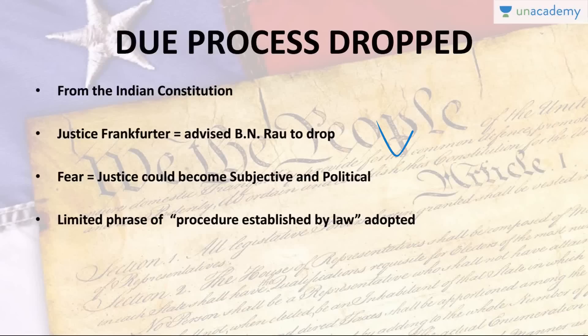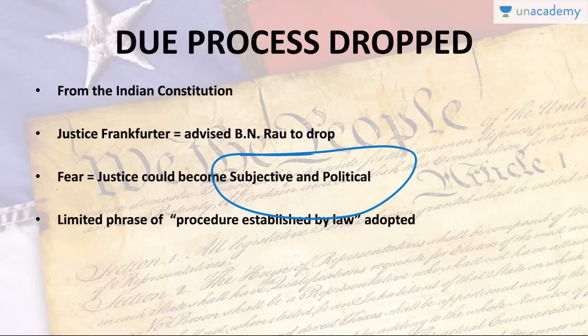Ashok Desai, senior advocate of the Supreme Court, said in an interview that Frankfurter advised against it because, in his view, due process would mean different judges taking different opinions of what was due and reasonable, creating a lot of chaos. Since India was newly independent, it would not be good for the democracy's health. The legal issue could become subjective and political, and they were afraid of that.